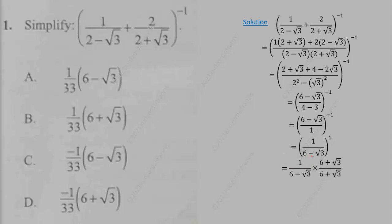We rationalize the denominator by multiplying both numerator and denominator by the conjugate of (6 − √3), which is (6 + √3). This gives another difference of squares: 6² − (√3)². Simplifying, we obtain 1/33 + 1/33 into (6 + √3), giving us the final answer.